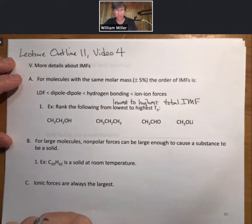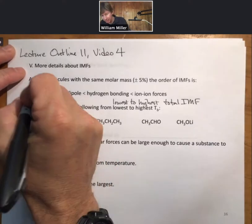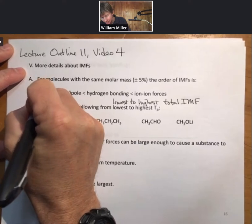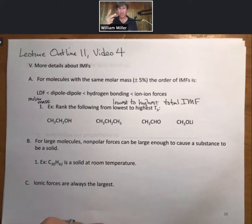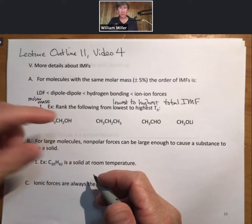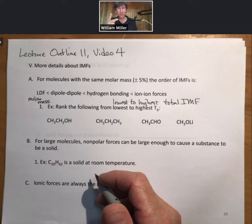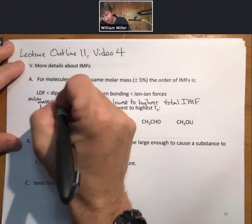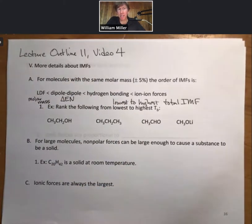It gets a little trickier because if there are two things that have LDF, then you have to look at molar mass. If you're looking at dipole-dipole and you have two things that are both dipole-dipole, which almost never happens, the way to tell them apart is delta electronegativity. The larger difference in electronegativity leads to a larger IMF and a higher boiling point.